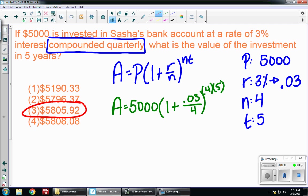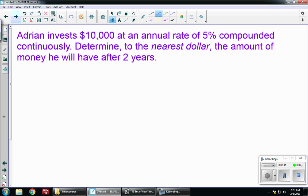Let's look at another one. Adrian invests $10,000 at an annual rate of 5% compounded continuously. Determine to the nearest dollar the amount of money he will have after two years. So if I'm compounding continuously, I'm using the formula A equals PE to the RT power.